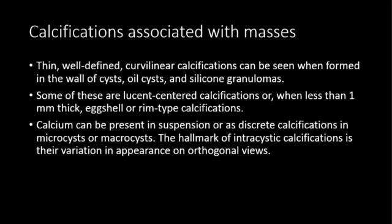Thin, well-defined calcifications can be seen in the wall of cysts, especially oil cysts and sometimes silicone granulomas. Silicone granulomas relate to older breast augmentation surgery, which was done not by placing an implant sack but by injecting silicone directly into the breast. This could result in silicone granuloma — inflammation around the silicone as a foreign body. Modern implants have better chemical composition, making this less likely to occur nowadays.